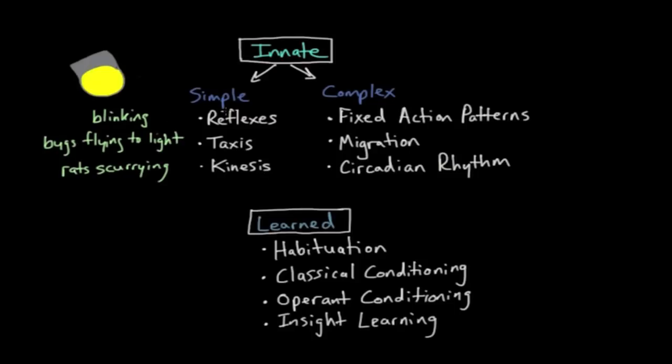So those are the simple innate behaviors. When it comes to complex behaviors, you have things like fixed action patterns, migration, and circadian rhythms. For complex behaviors, let's put this in the context of a bird. So here we have our bird.